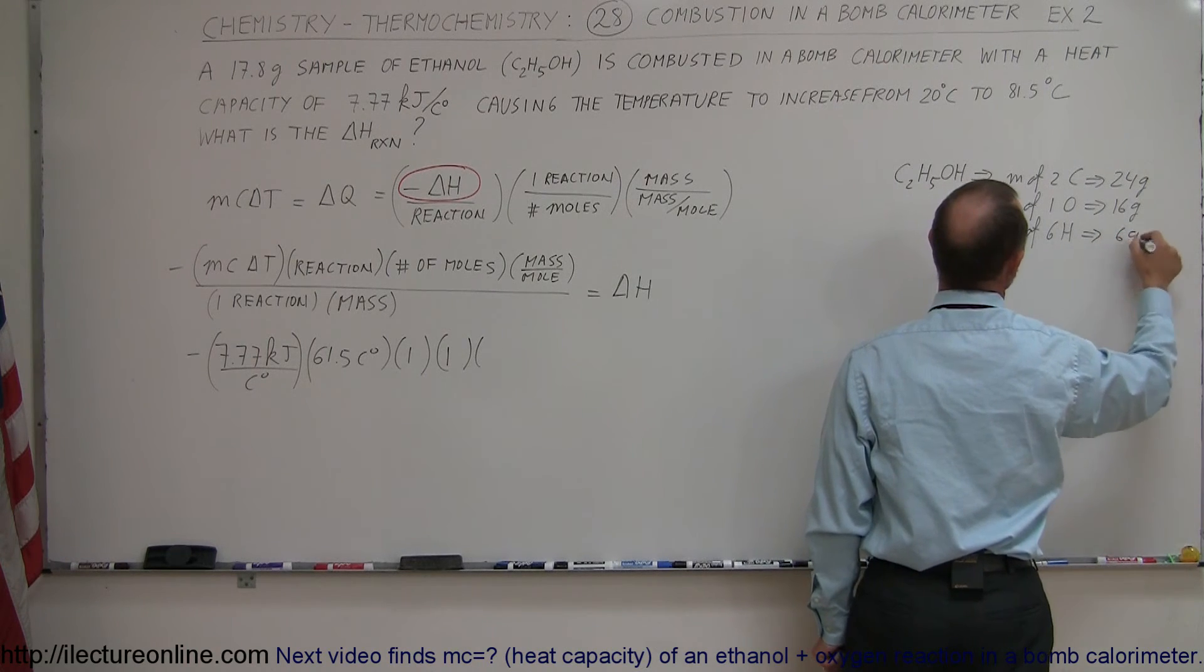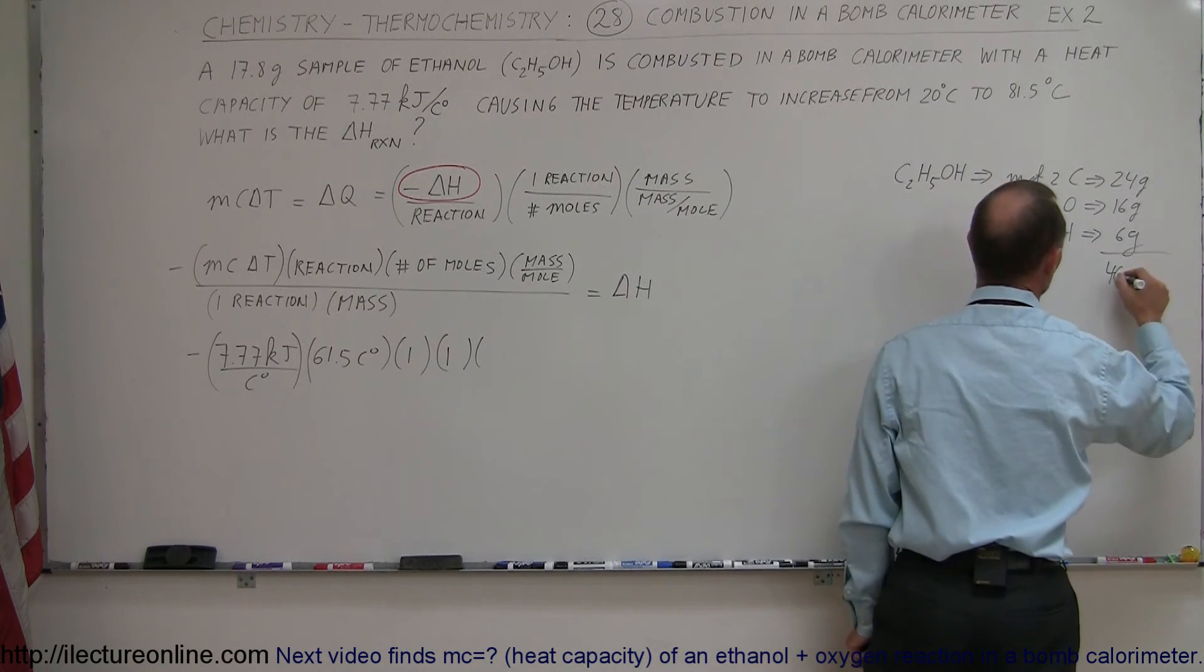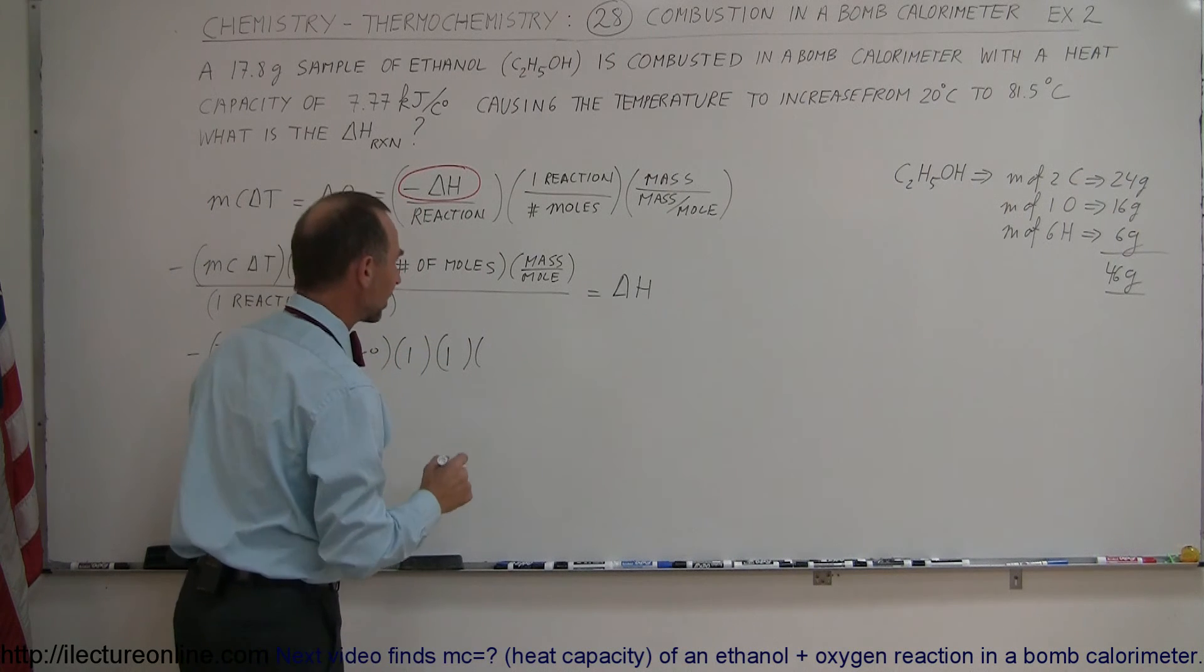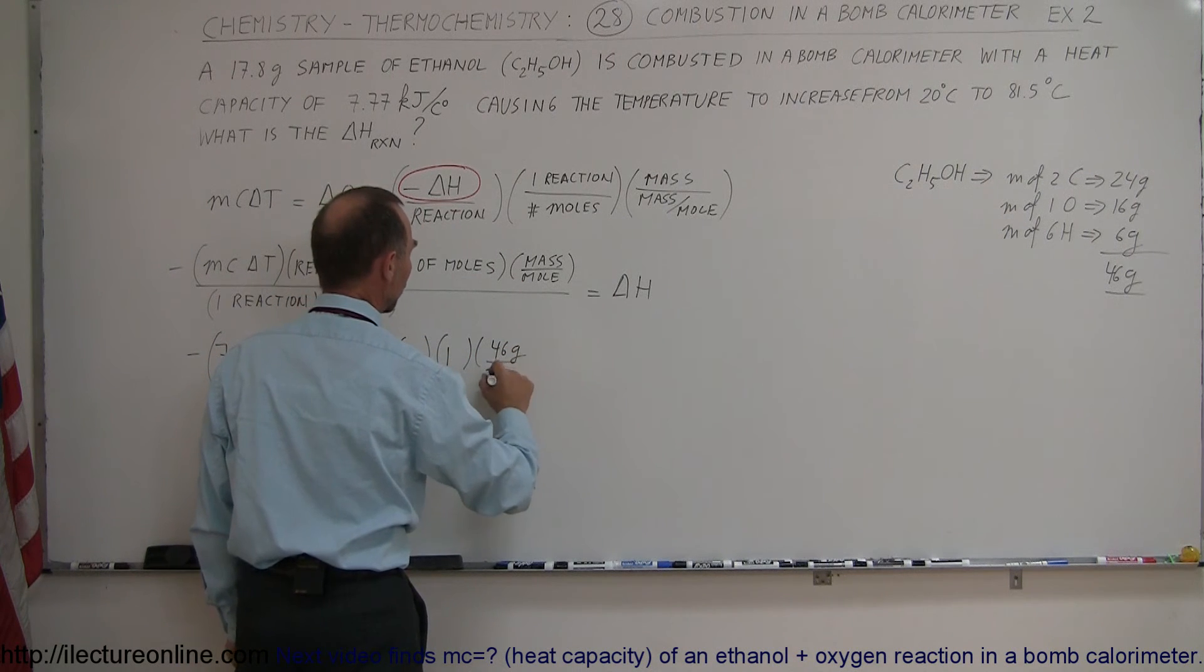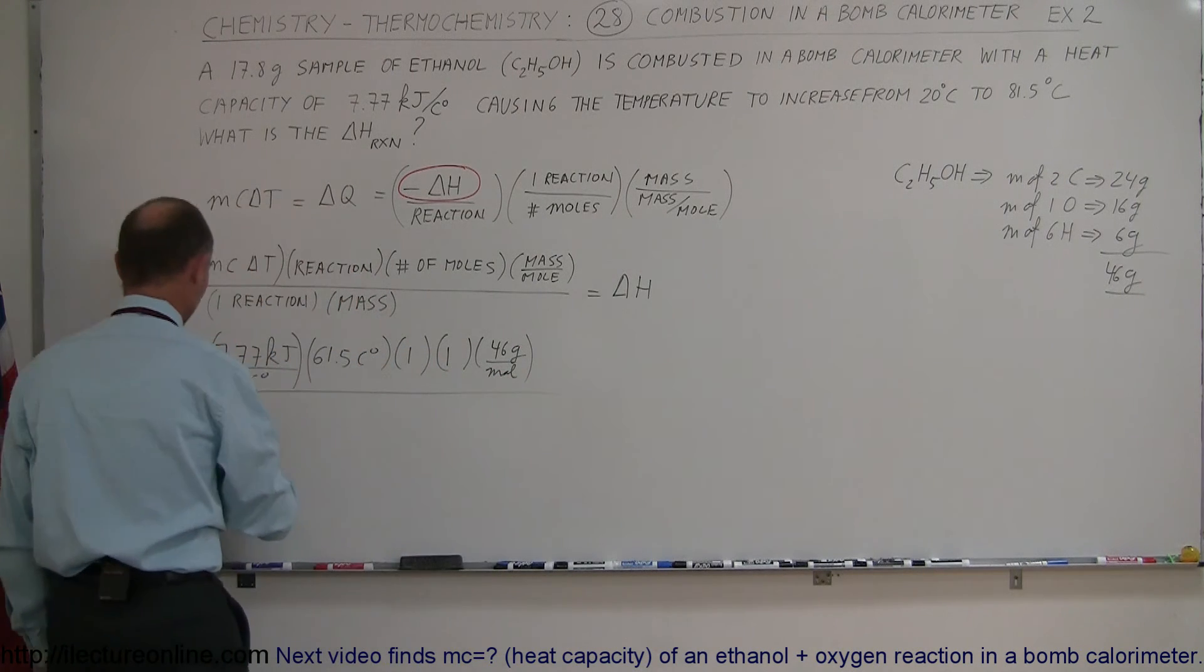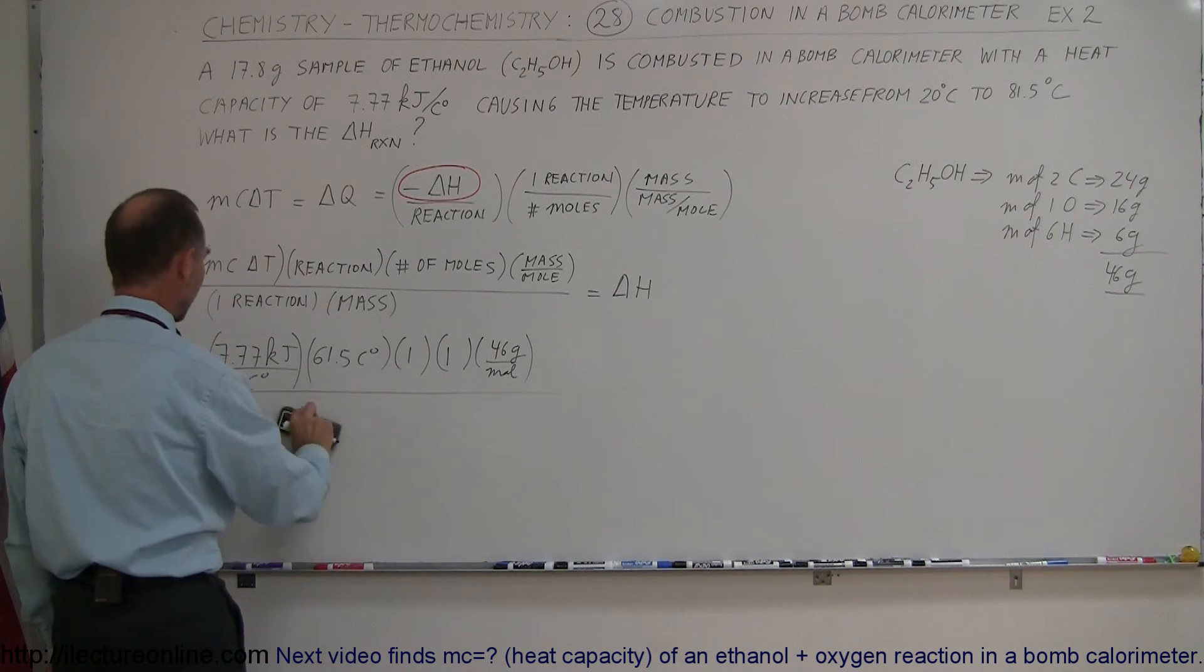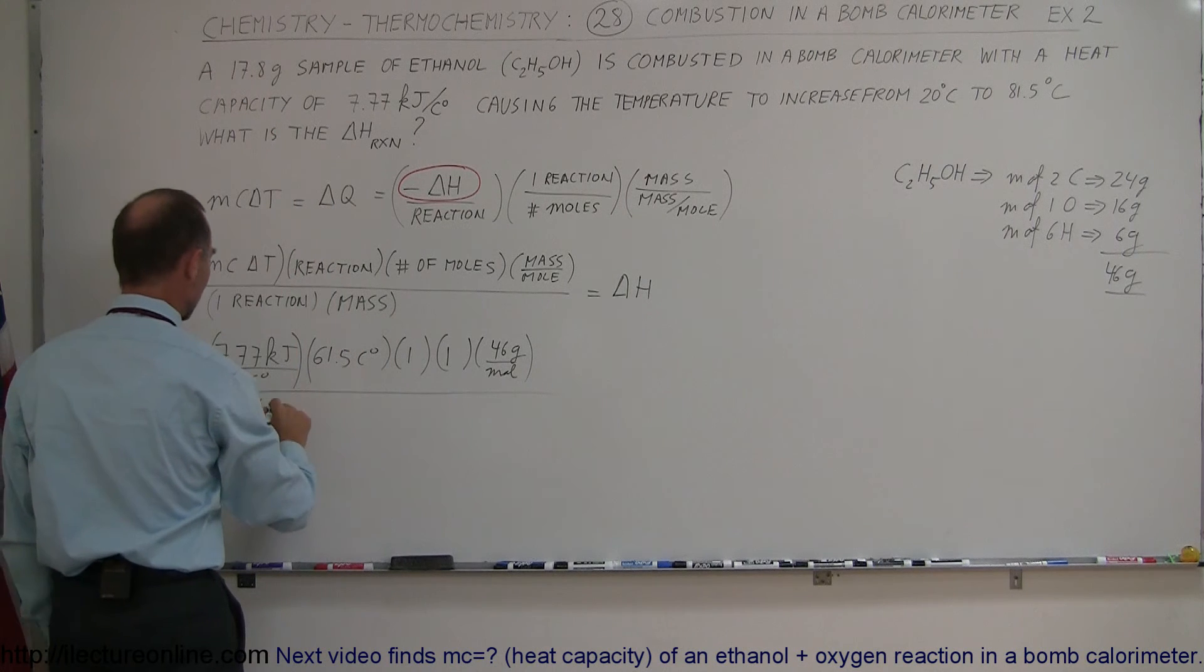Rounding off to the nearest whole gram together, that forms 46 grams, which is the molar mass of the ethanol. So mass per mole is 46 grams per mole. We divide the whole thing by a single reaction and multiply times the mass of the sample, which is 17.8.